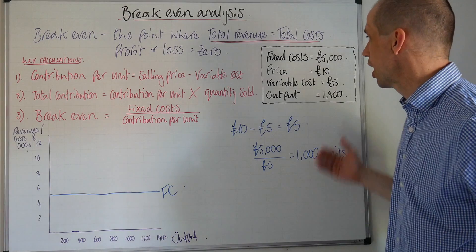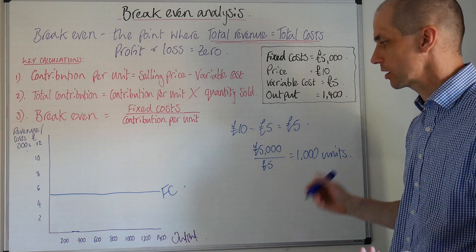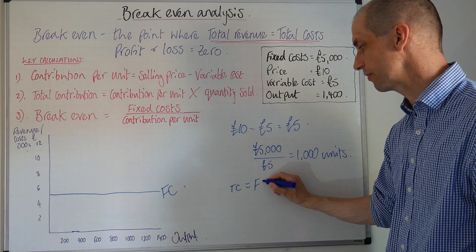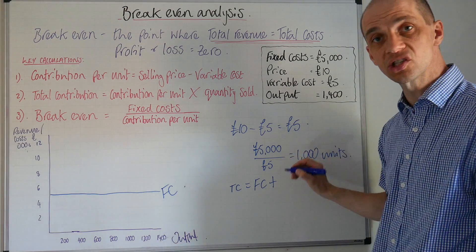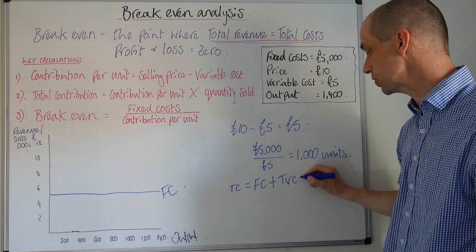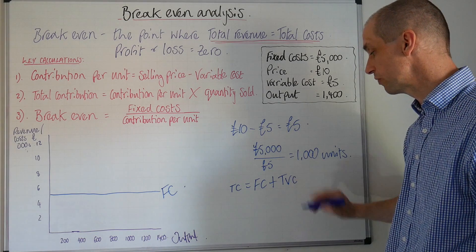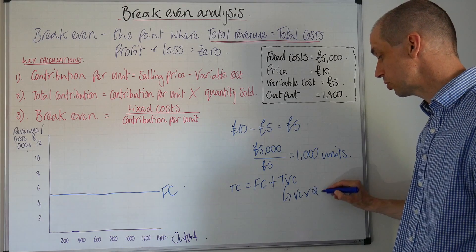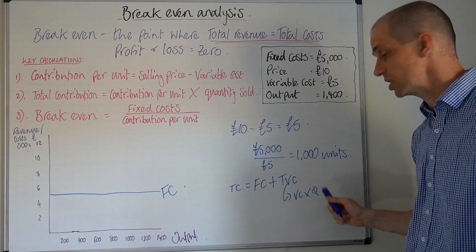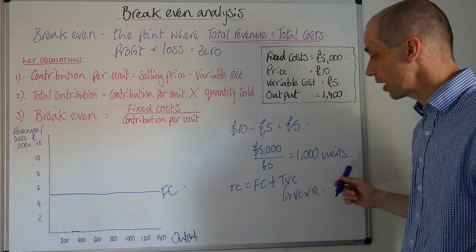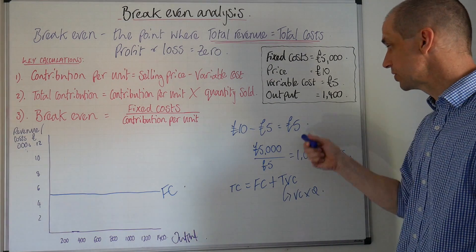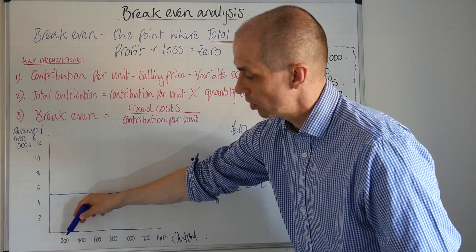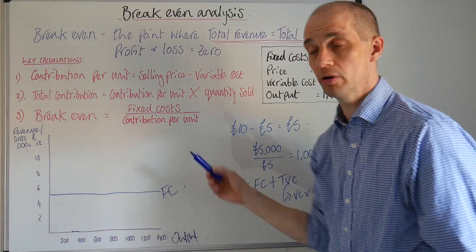Now let's consider our total cost. If you remember, the total cost equals the fixed cost plus the total variable cost. Now to get this total variable cost you then need to take your variable cost and multiply it by the quantity or the output. Now here we can see our variable cost is £5, so all we're going to do is multiply it by each of these numbers each time.